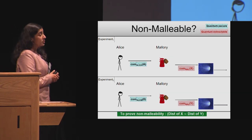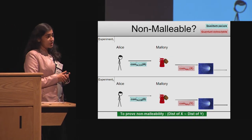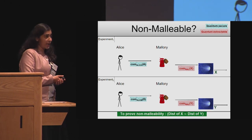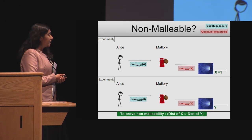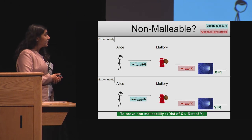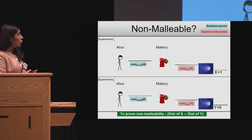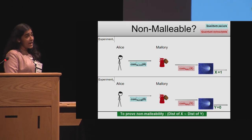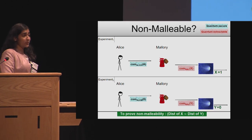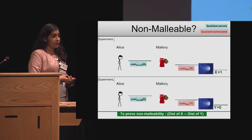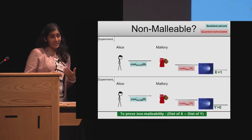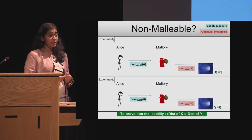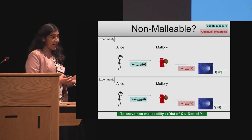So a quantum computer, given such a transcript, can find out what x and y are. And if they're different, then we've built a quantum machine that actually distinguishes Alice's commitment to a from Alice's commitment to zero. Let me say that again slowly: the man in the middle, Mallory,